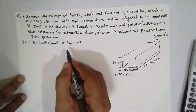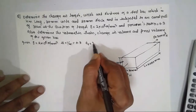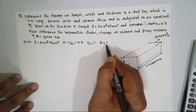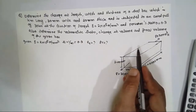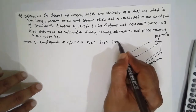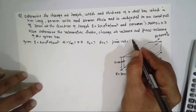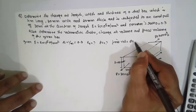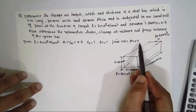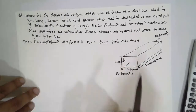We have to determine: volumetric strain Ev, change in volume ΔV, and final volume. Final volume = ΔV + V (change in volume plus initial volume).